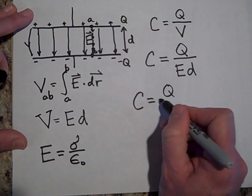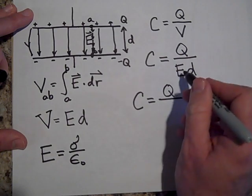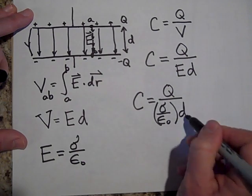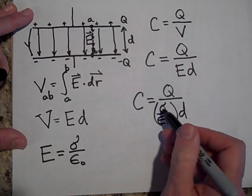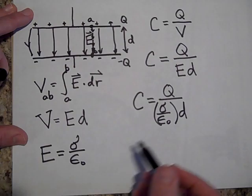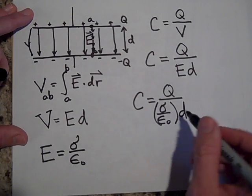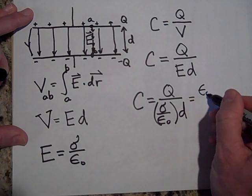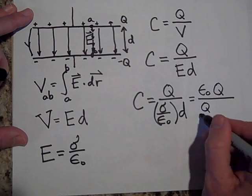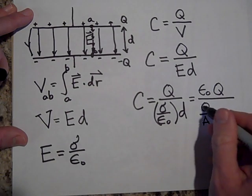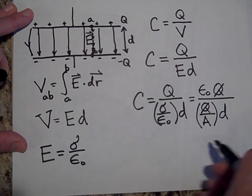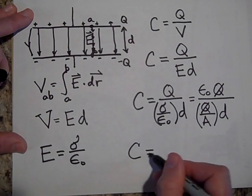So the capacitance is Q over E. Now E is sigma over epsilon naught, that's the E, times d. Okay, but sigma is Q over A. It's the charge per area on this thing. So let me bring the epsilon naught all the way up and for sigma I'm going to put Q over A. We can cancel out a Q and that A can come all the way up to the top.